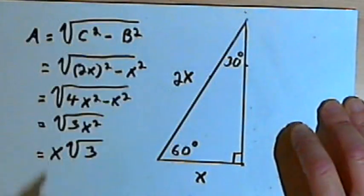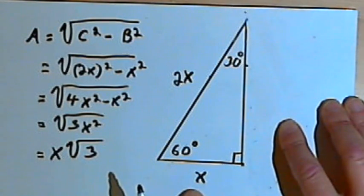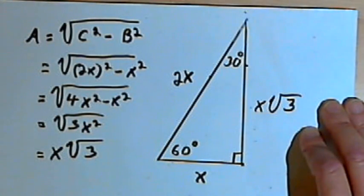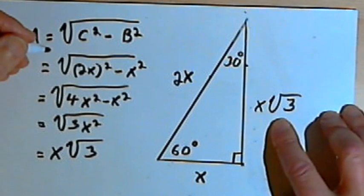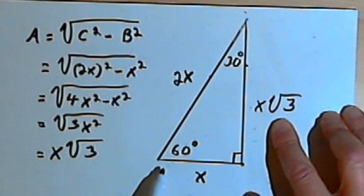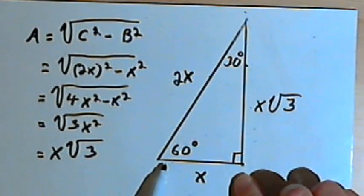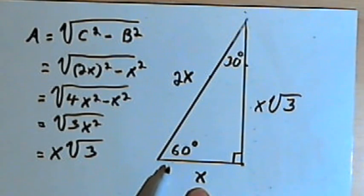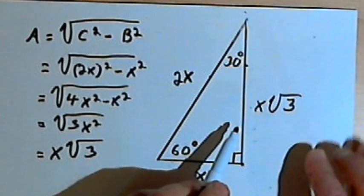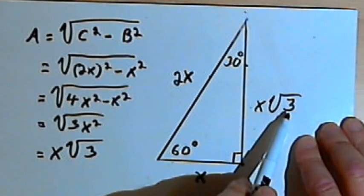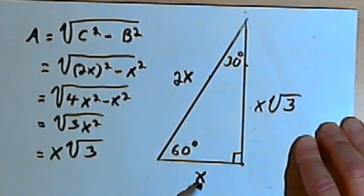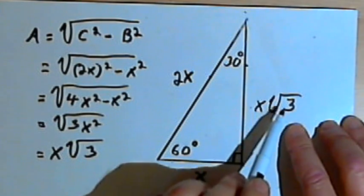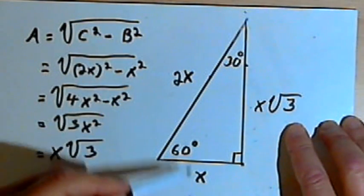So in a 30-60-90 triangle, if the short leg has length x, then the longer leg has length x times the square root of 3. Just as with the isosceles right triangle, if you're given the shorter leg — say it's 7 centimeters — then the longer leg is 7 times the square root of 3 centimeters. Whatever the shorter leg is, multiply it by the square root of 3 for the longer leg, and double it for the hypotenuse.